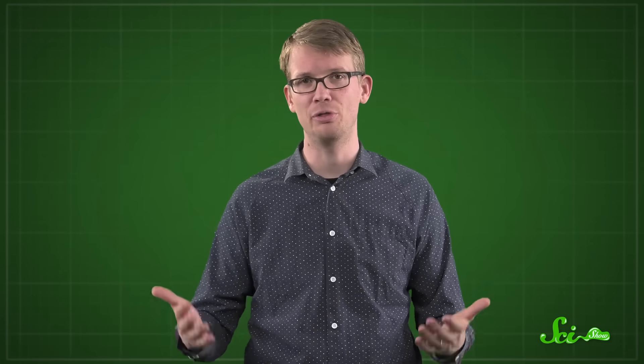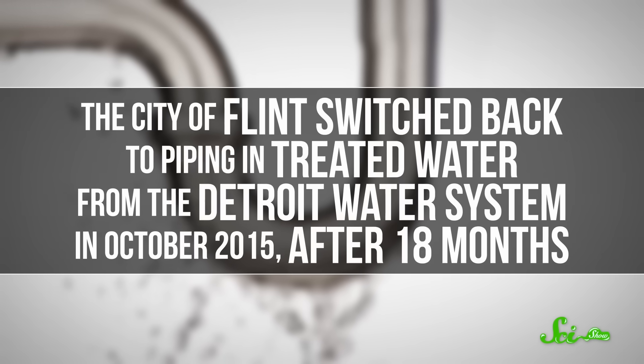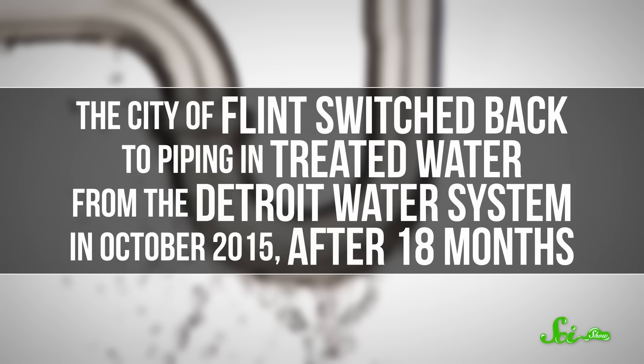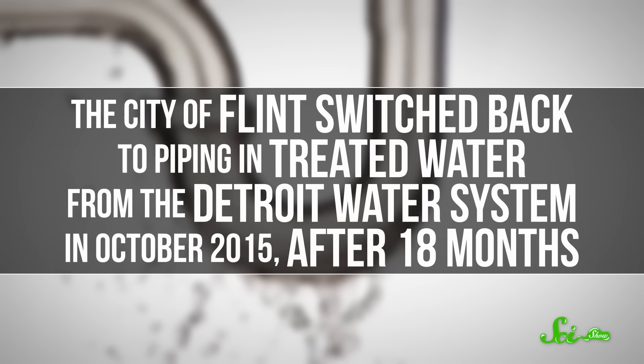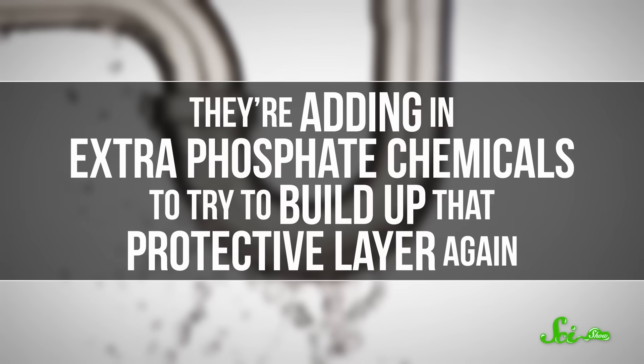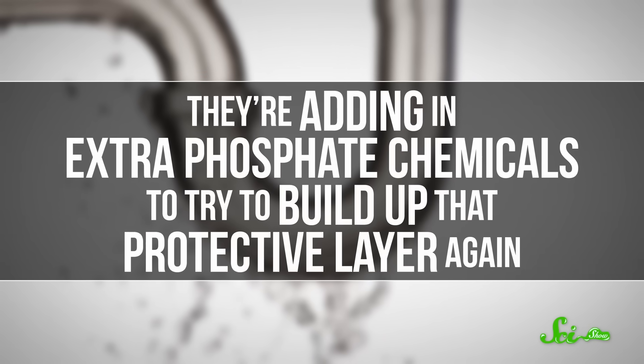The city of Flint switched back to piping and treated water from the Detroit water system in October 2015, after 18 months. And they're adding in extra phosphate chemicals to try to build up that protective layer again. But that doesn't just fix the problem that had escalated over that year and a half.